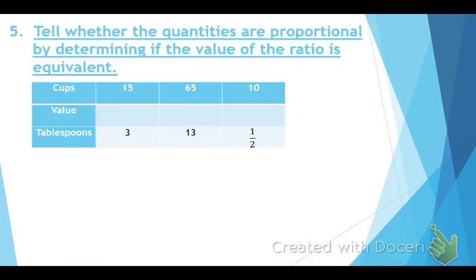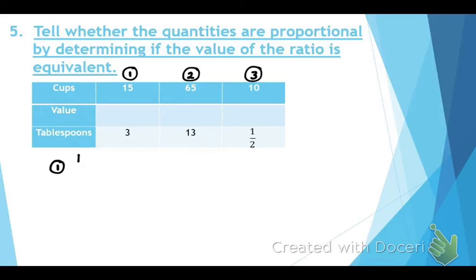Number five asks you to tell whether the quantities are proportional by determining if the value of the ratio is equivalent. We have three sections. For the first one, divide the top by the bottom: 15 divided by 3 equals 5.